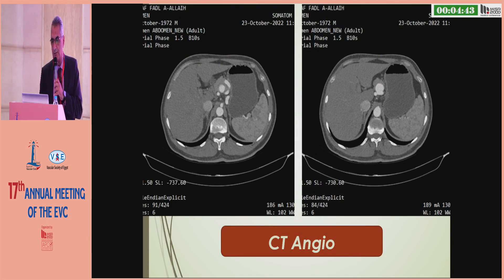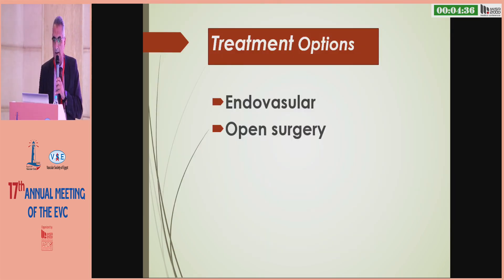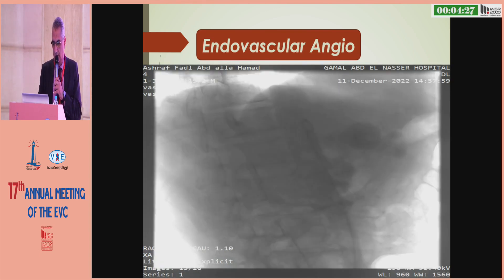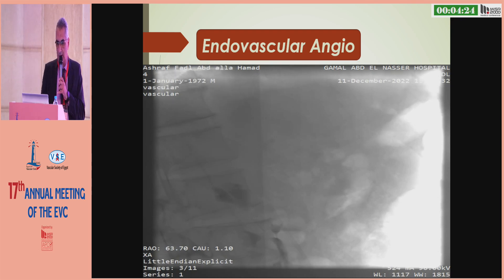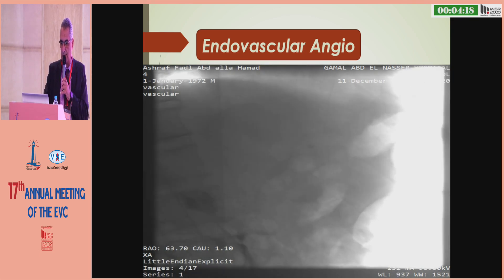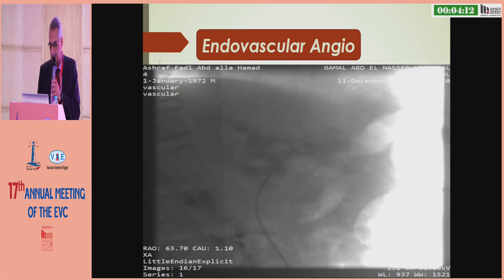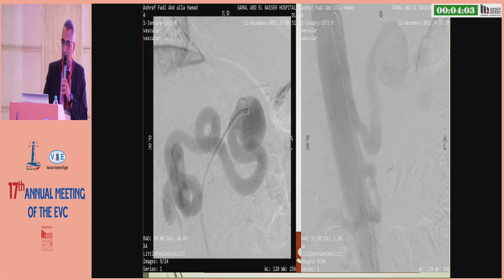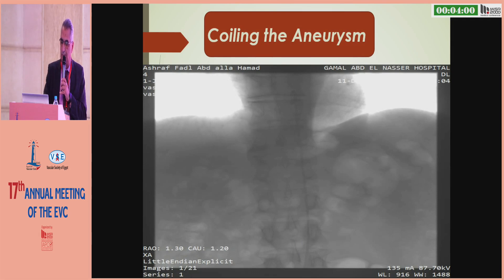Here is the picture of the splenic aneurysm. For treatment, the options are endovascular or open surgery, and we preferred the endovascular approach. We performed diagnostic DSA angiography to confirm the aneurysm and achieved cannulation of the splenic artery for treatment.